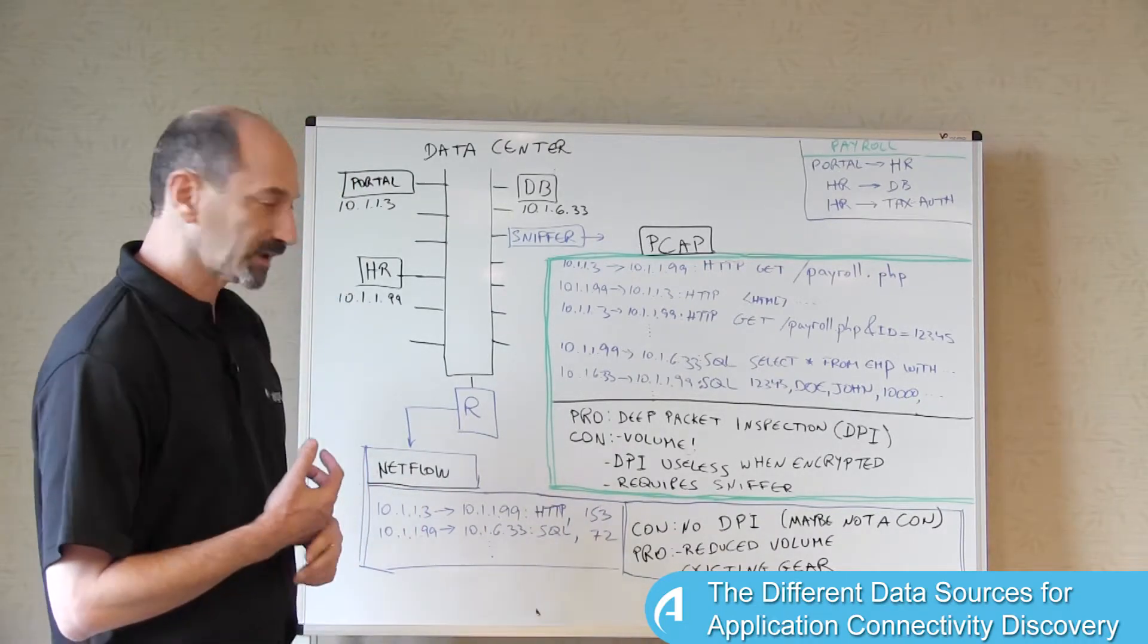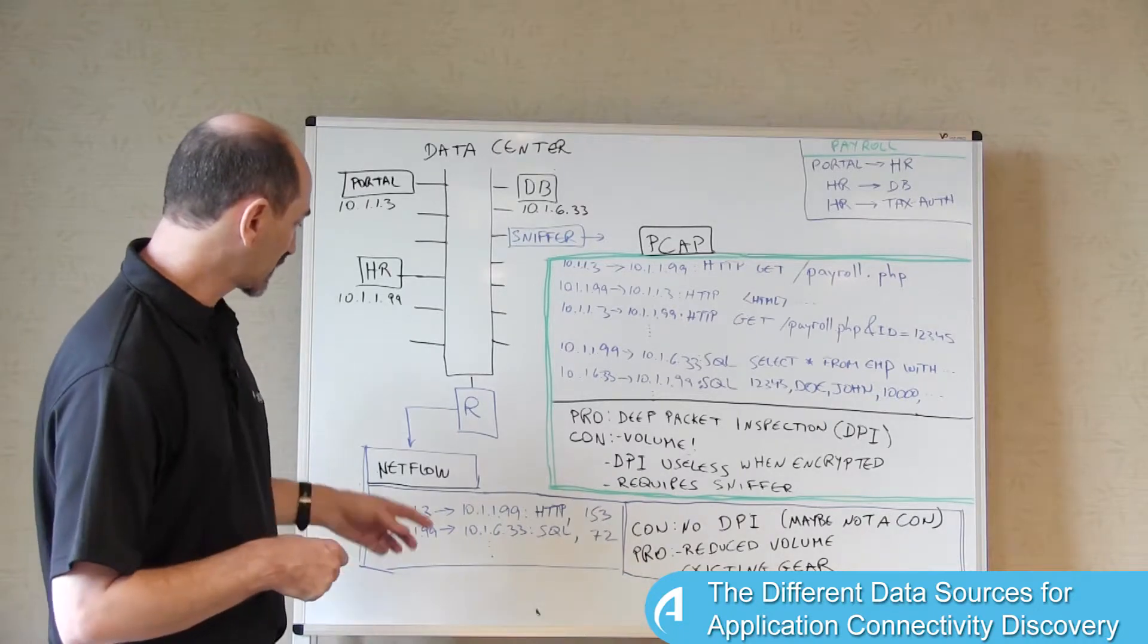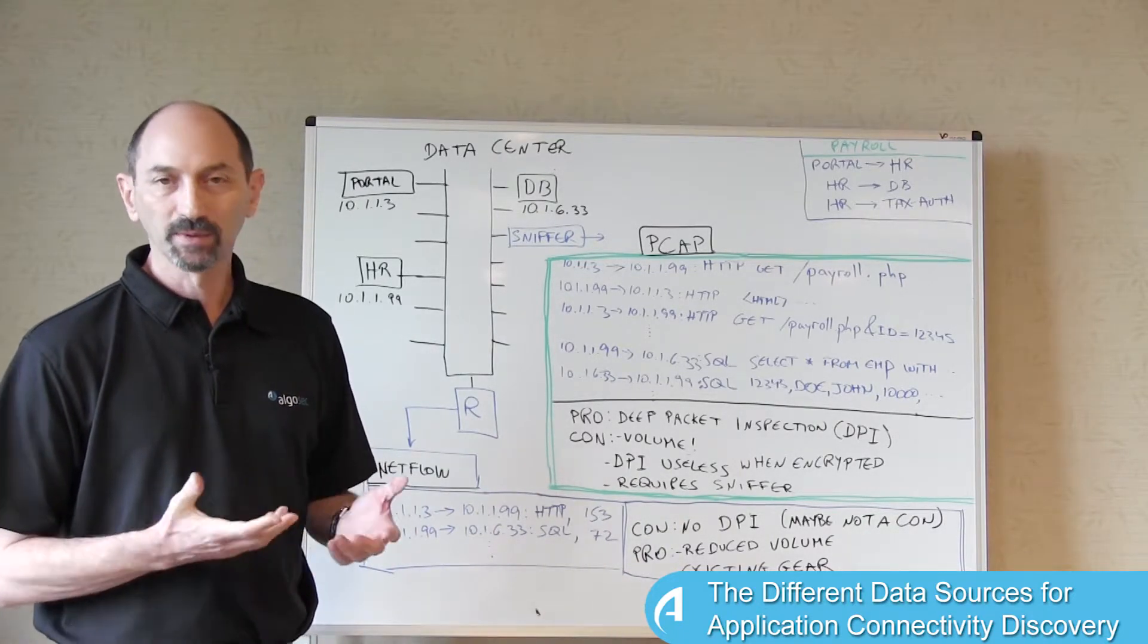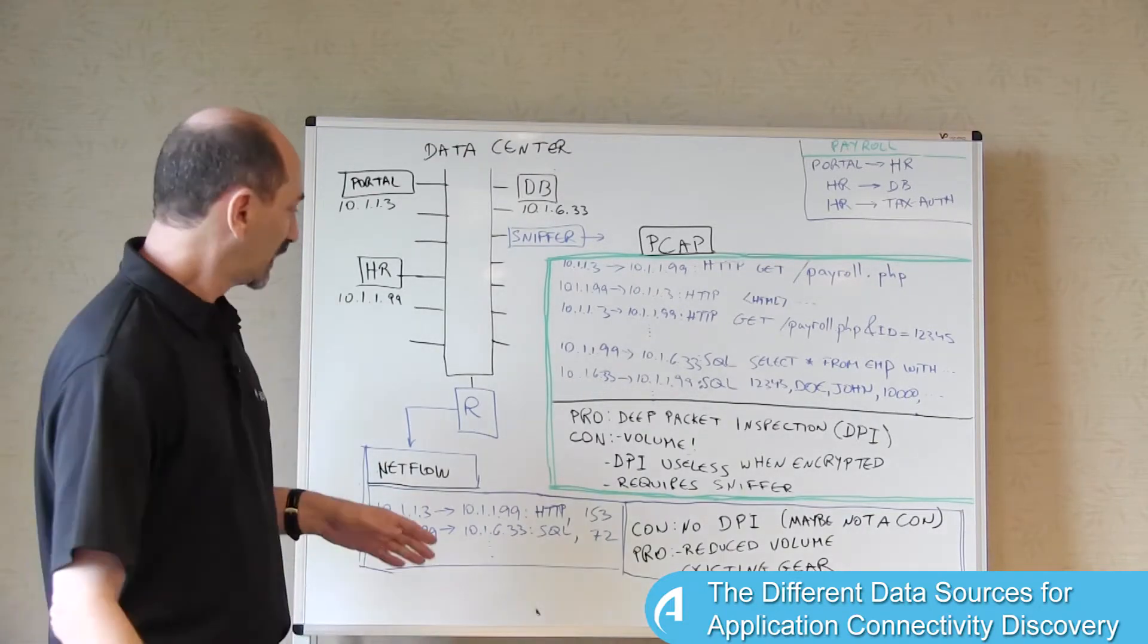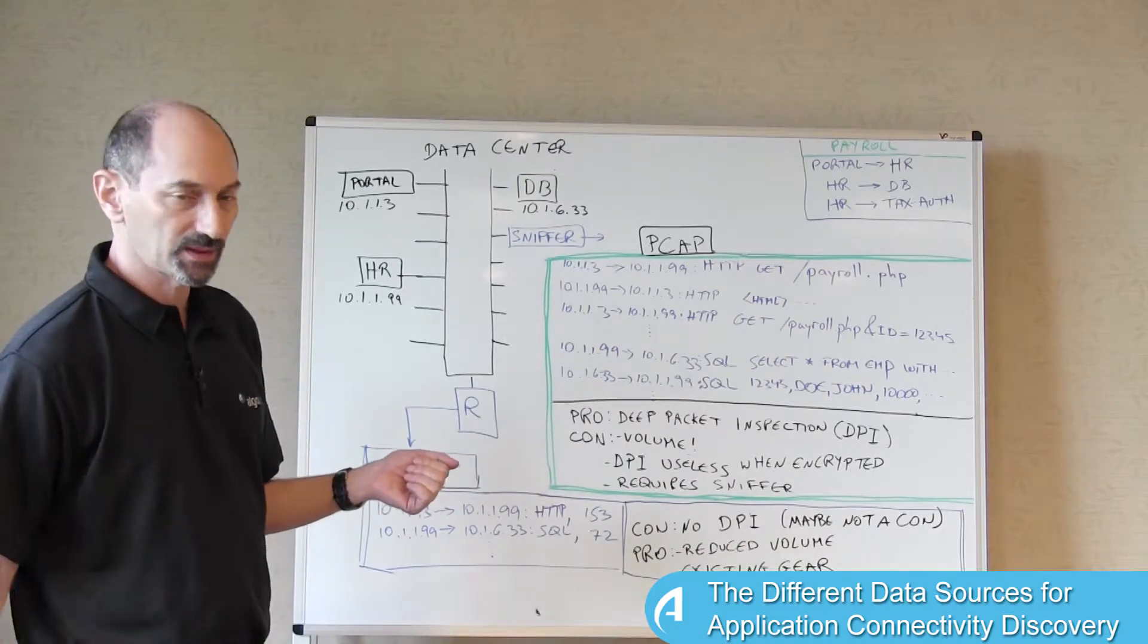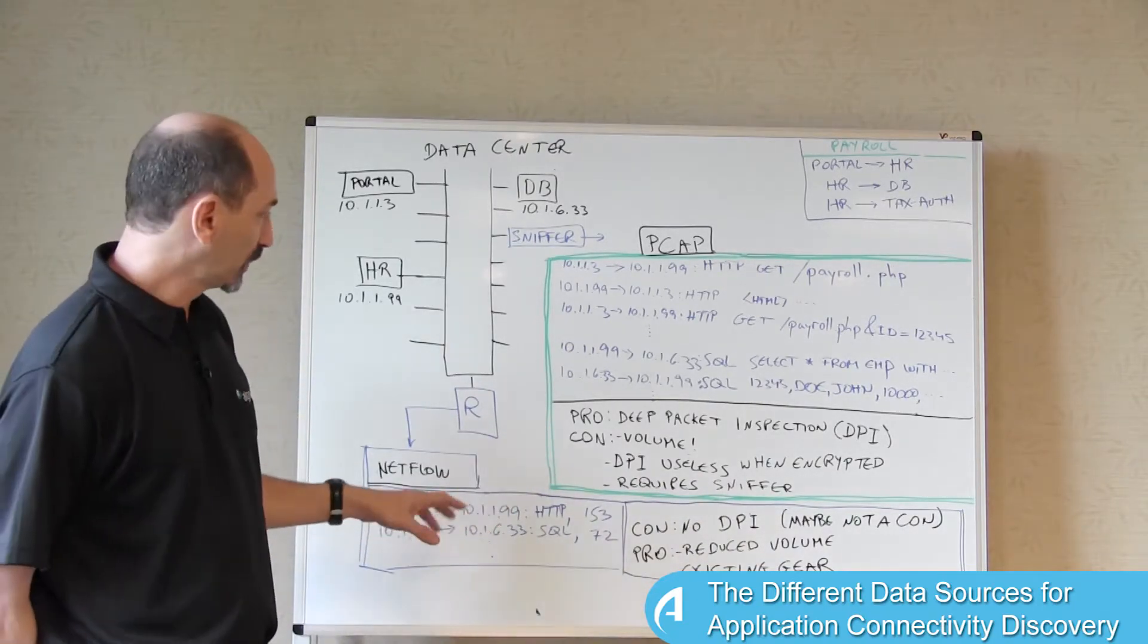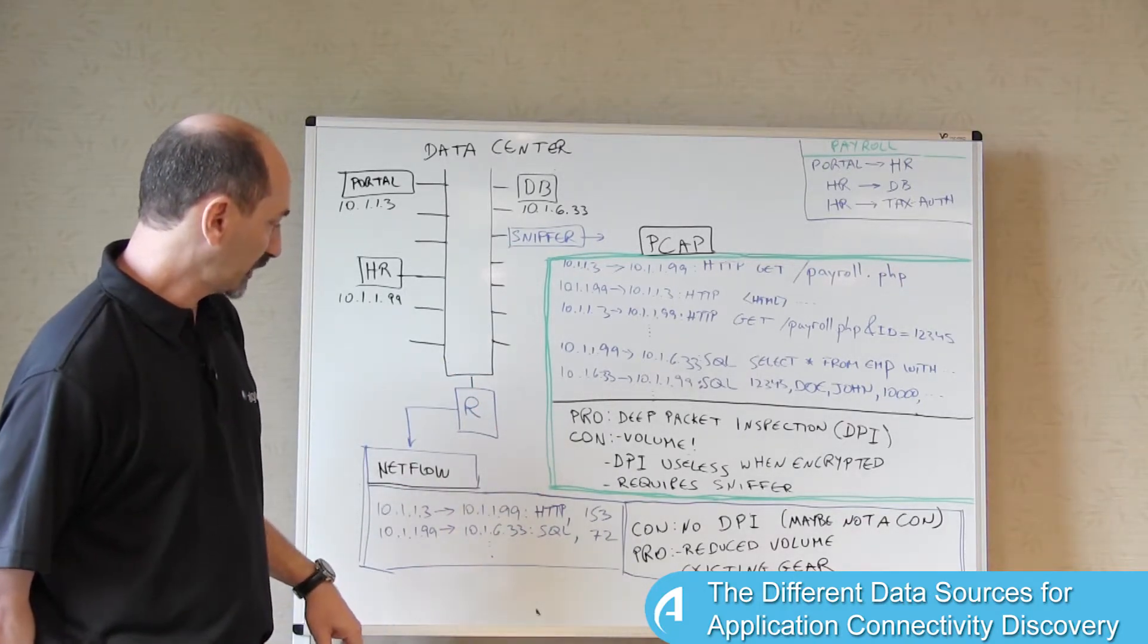The other thing that NetFlow has, which is in our advantage, is that many pieces of network gear are able to emit NetFlow through a simple configuration change. It's part of routers and switches that you might have deployed in your network anyway, so you don't need to deploy another piece of equipment to gather this information.